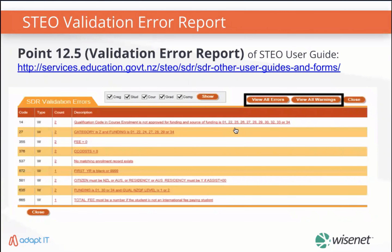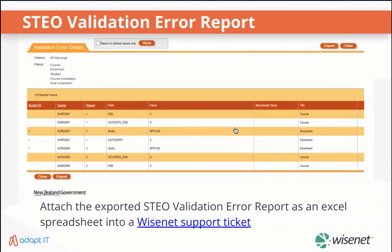You can download the validation report from STEO. Please note we wouldn't be able to do this for you because we don't have access to STEO. So if you need training in STEO, please contact the Ministry of Education. If you're unsure of any errors, please contact us and send us the validation error report as an Excel document, because we need information about the field, the record that is being affected and also the course details. I've included some useful article links throughout the presentation.